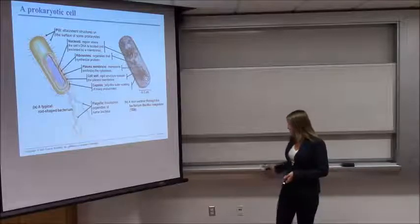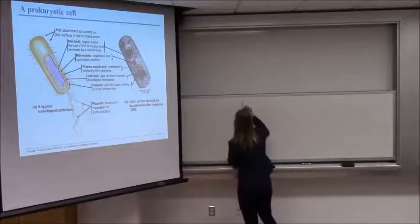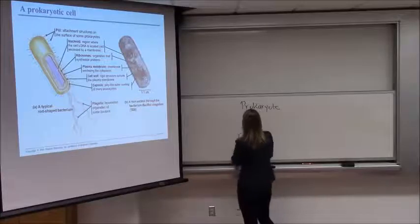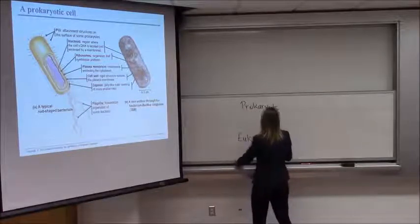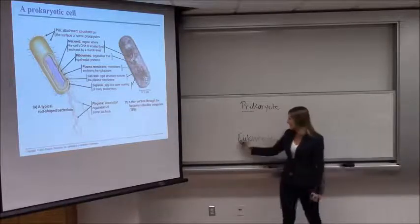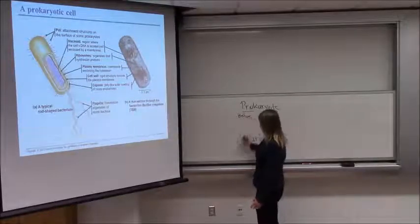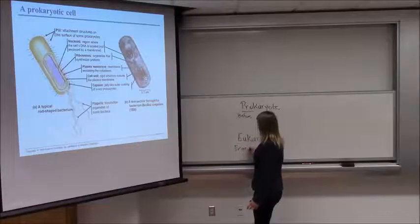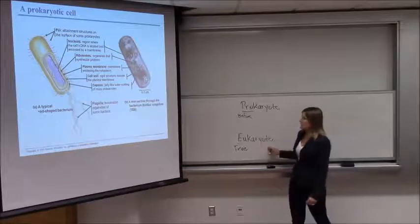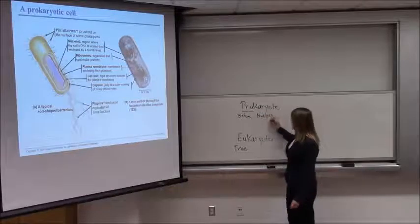This is a prokaryotic cell. What do I mean by prokaryote versus eukaryote? These are two very important terms to know in biology. 'Pro' means before, and 'eu' means true. 'Karyote' means kernel — in this context, it's referring to the nucleus. So 'prokaryote' means before nucleus, and 'eukaryote' means true nucleus.